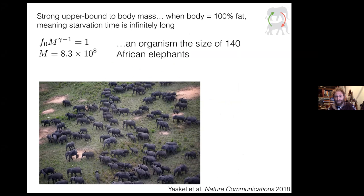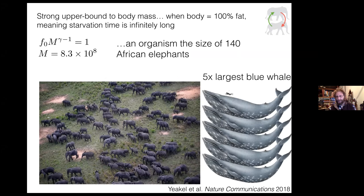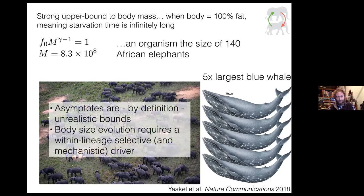If we're thinking about body size evolution, we really require thinking about within-lineage selective drivers that are mechanistic. We've talked about how to identify different states a consumer can be in, and how those rates and timescales change with body size. Could we put these into a simple Lotka-Volterra type model but make starvation explicit? We have a classic predator-prey model on top, and below a more complicated model where the consumer can be either full or hungry, moving between states by starvation and recovery.